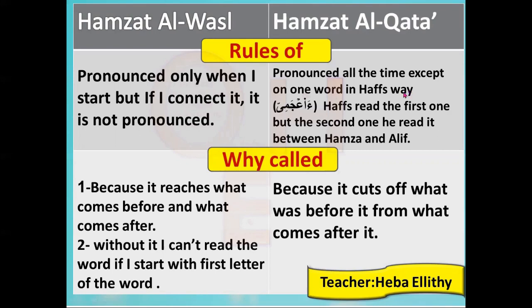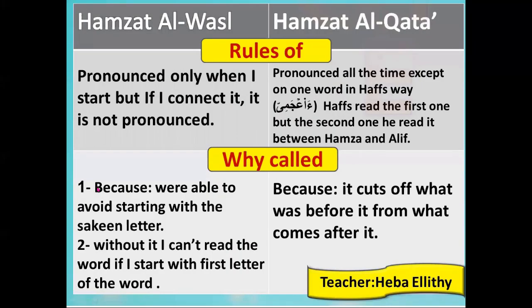Except in one word, Hafs has Tasheel. He reads the first Hamza normally, but the second one he reads between a Hamza and an Alif — we call it Tasheel al-Hamza. So the word is read as A'ajami. There is a special video on the channel about this word. As for Al-Zakariyya and A'allah — that is another story. The reason we call it Hamzat al-Wasl is because it enables us to avoid starting with a Sukun letter.